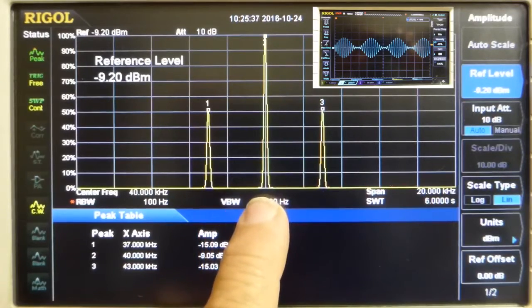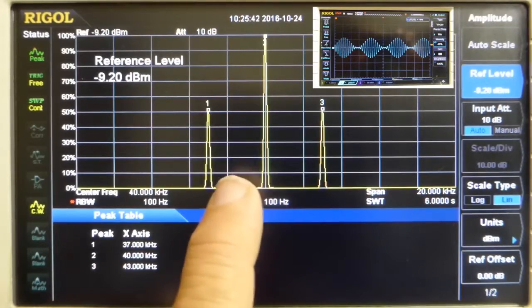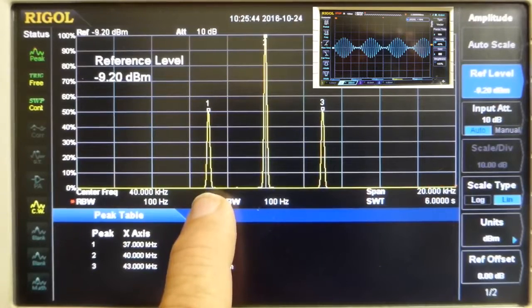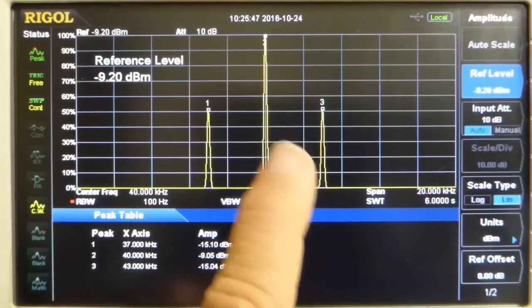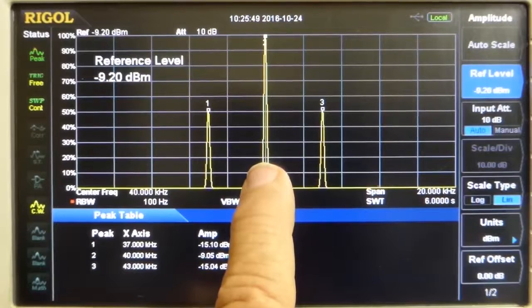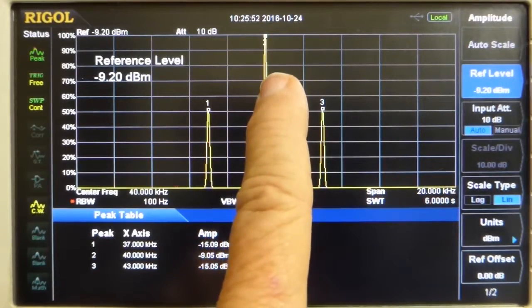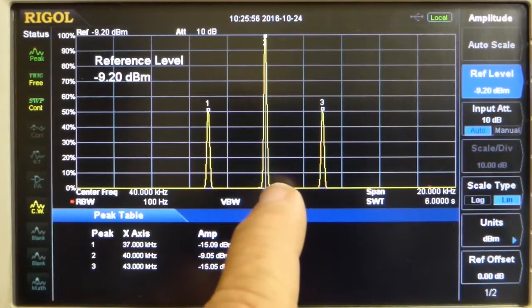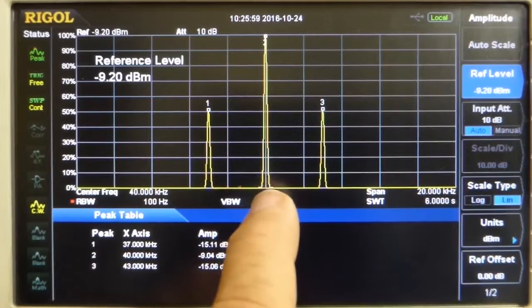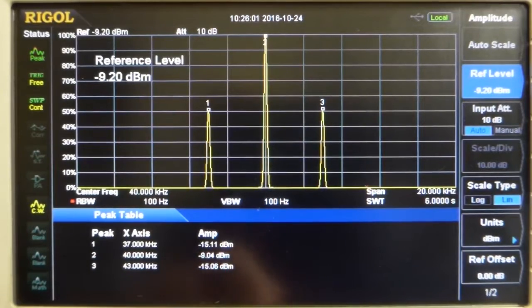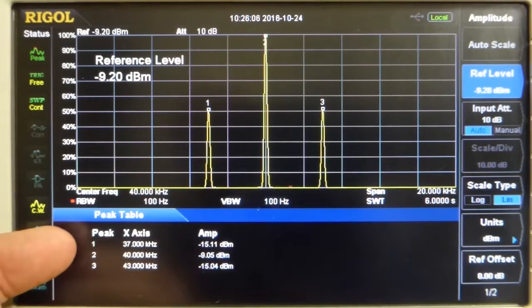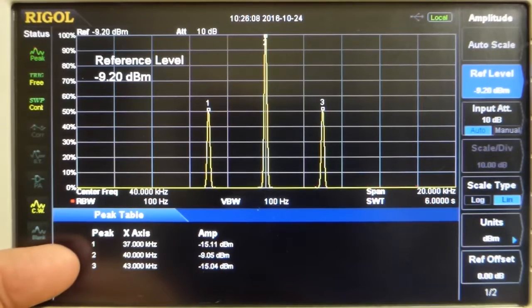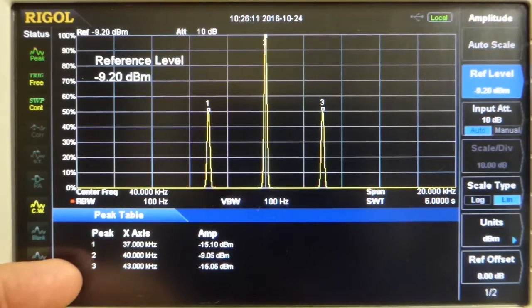Here we have an AM signal that is amplitude modulated with a sine wave. This is 3 kHz down. This is 3 kHz up. This is the carrier. Notice it's at 100% up here. These are 50% because half of the energy is in the sidebands. And you see our frequencies are 3 kHz down, 40 kHz, 3 kHz up at 43 kHz.